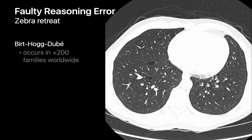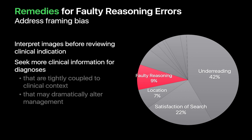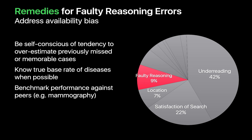Strategies for avoiding faulty reasoning errors require us to remedy anchoring bias by checking the urge to make early guesses, challenging ourselves to disprove initial diagnoses, and keeping an open mind to the opinions of others. We can minimize faulty reasoning errors by avoiding framing biases — try interpreting images before glancing at the clinical indication. Be more aggressive in seeking additional clinical information before finalizing a report for diagnoses in which clinical context is important, like in hypersensitivity pneumonitis. Address availability bias by being self-conscious of our tendency to overestimate diagnoses we may have recently missed or read about.